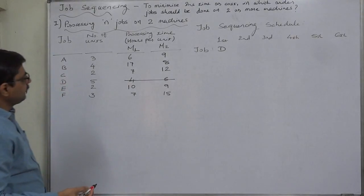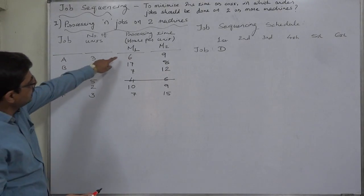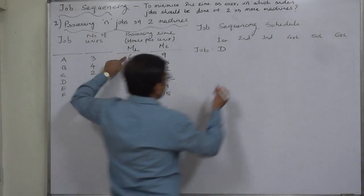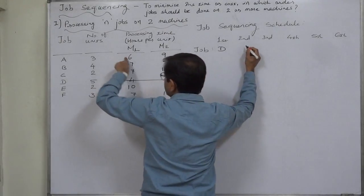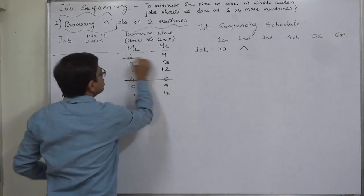Now among the remaining five jobs (A, B, C, E, F), the minimum time is on machine one, and that is for job A. Again on the left-hand side, since the least time is on machine one, A is placed in the second position.